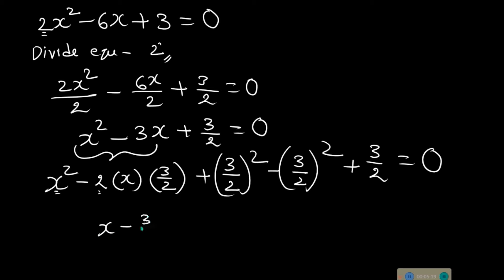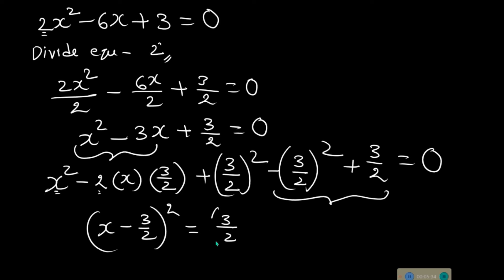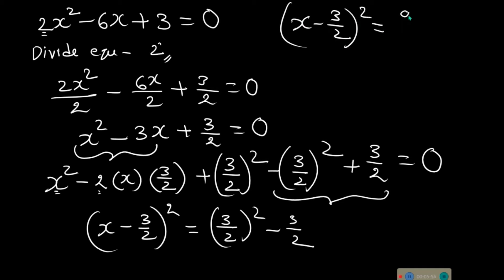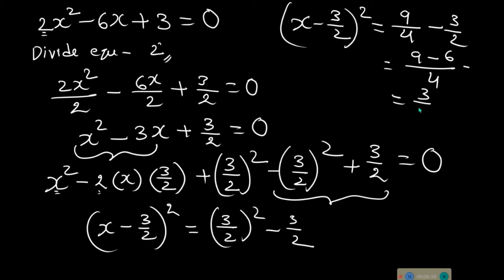This can now be written as (x minus 3/2) whole squared. We send the extra terms to the other side, so the left side is (x minus 3/2) squared equals (3/2) squared minus 3/2, which is 9 over 4 minus 3 over 2. Taking LCM of 4, that becomes 9 minus 6 equals 3 over 4.